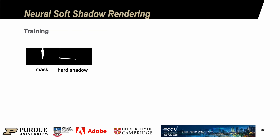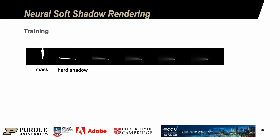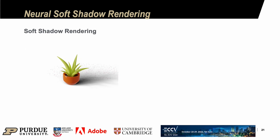We further train a neural network to render controllable soft shadows from the hard shadow. Since we want the user to control the softness, we rendered soft shadow ground truth with different softness levels. Soft shadow can be computed by integrating a set of hard shadows generated by area light. However, our experiments show that to render a soft shadow with large softness, it took more than 30 seconds to compute. With our neural soft shadow renderer, the soft shadow can be rendered in just 7 milliseconds.